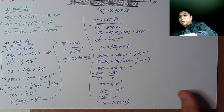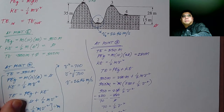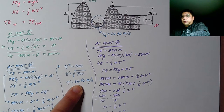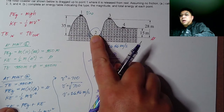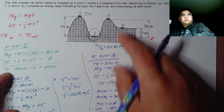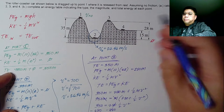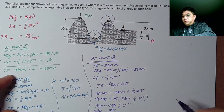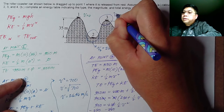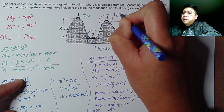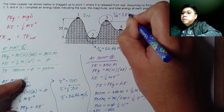To validate: earlier it was 26.46 m/s at the bottom, and now it's only 11.83 m/s because the roller coaster is higher. The higher the elevation, the lower the velocity, because kinetic energy has been converted into gravitational potential energy.